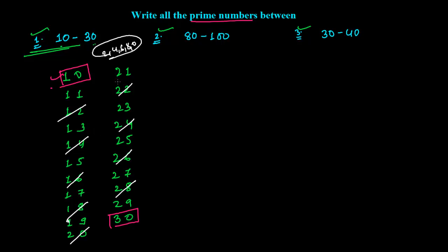Now you have to cancel all those numbers which are divisible by 3. Which numbers here are divisible by 3? Using the table of 3: 12 is already canceled, then 15, 18, 21, 24, and 27.